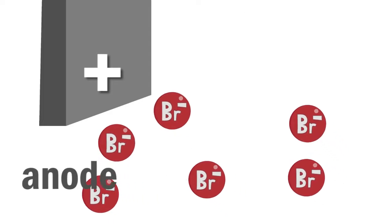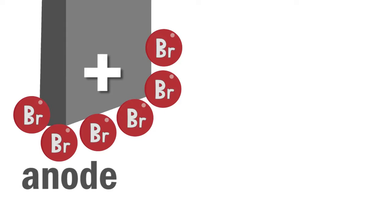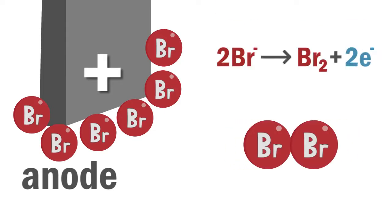At the anode or positive electrode, the bromide ions will each lose a single electron and become bromine atoms. And like the chlorine atoms, they will pair up to form bromine molecules.